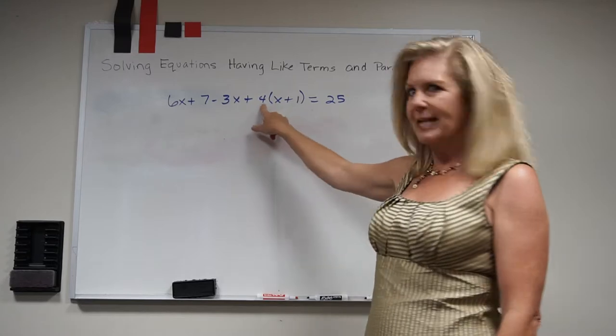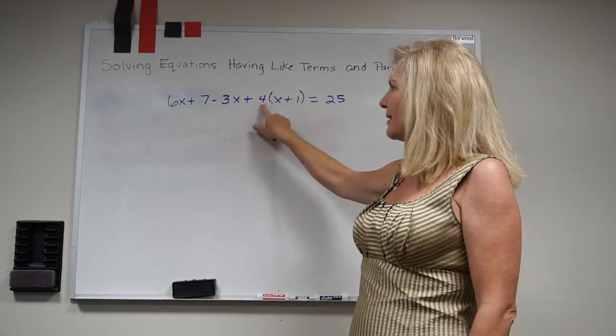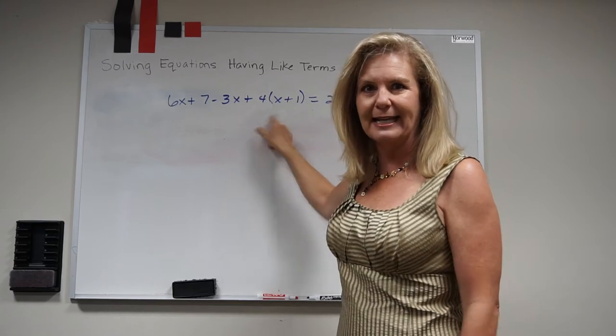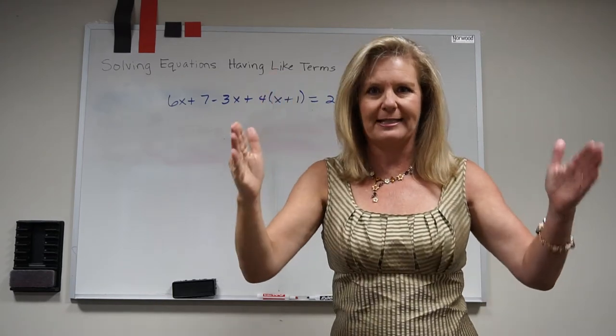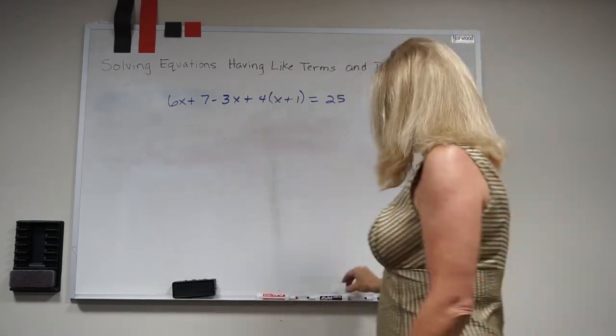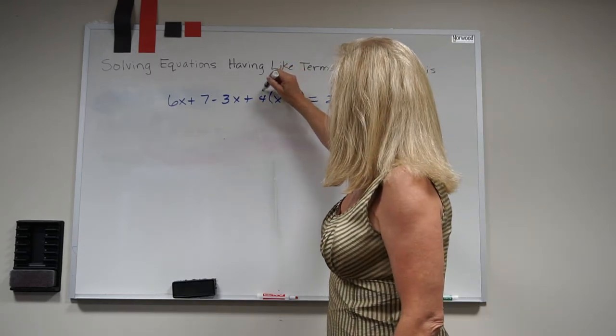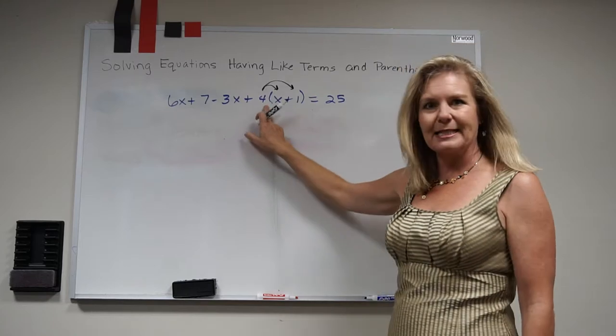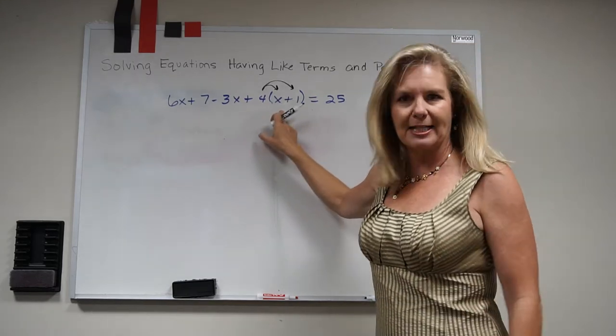I see a number on the outside with nothing in between the number and the parentheses, and I see an addition sign on the inside. It perfectly fits distributive property. So I'm going to actually solve that piece first and we know that this means there's four groups of x plus 1.